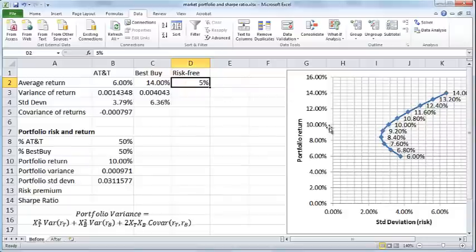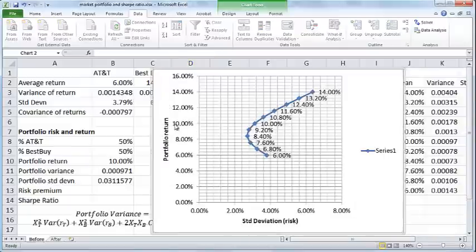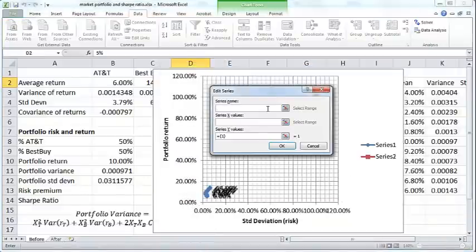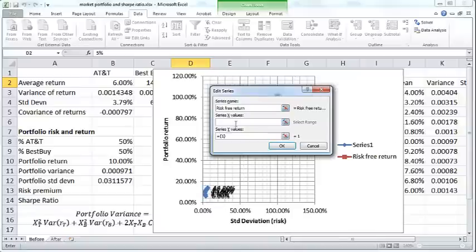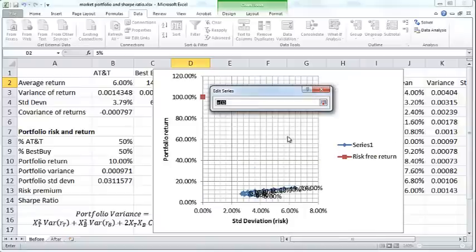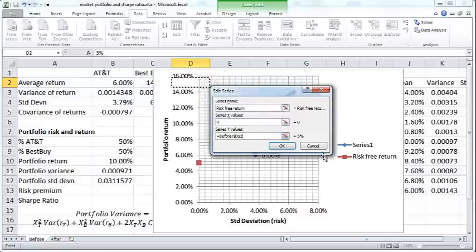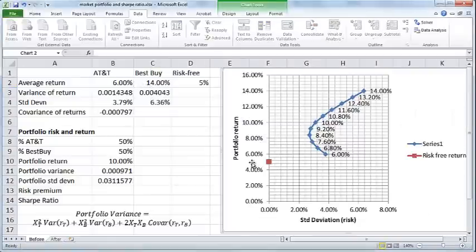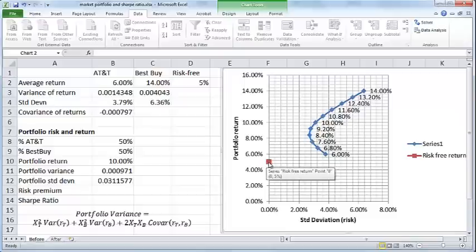So how do you do that? Let me just represent this risk-free return on this graph here. So what I want to do is I want to include this data, add series name risk-free return, and then the x value is 0, and the y value is this one here. So now you have this red square dot here that represents the risk-free rate of 5%. And so you can see that it has 0 risk and it has a 5% return.